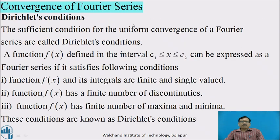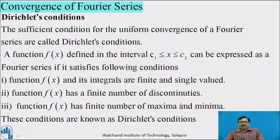Now we will see convergence of the Fourier series — these are called Dirichlet's conditions. The sufficient conditions for the uniform convergence of a Fourier series are called Dirichlet's conditions. A function f(x) defined in the interval c₁ to c₂ can be expressed as a Fourier series if it satisfies the following conditions: first, f(x) and its integrals are finite and single-valued; second, f(x) has a finite number of discontinuities; third, f(x) has a finite number of maxima and minima.